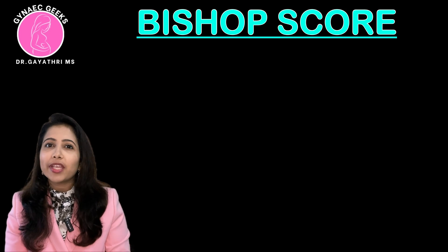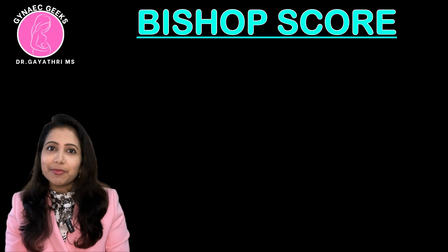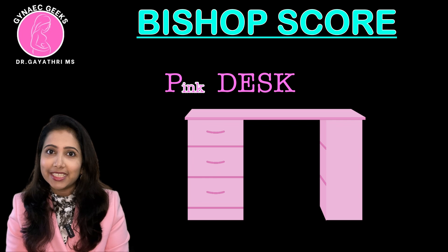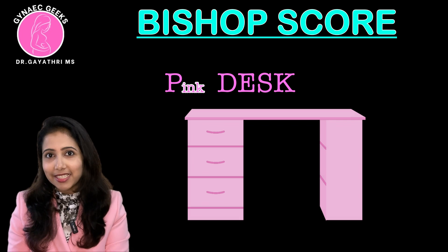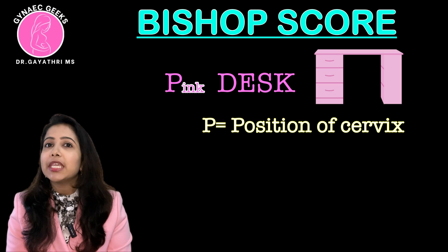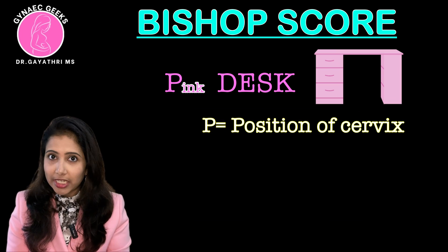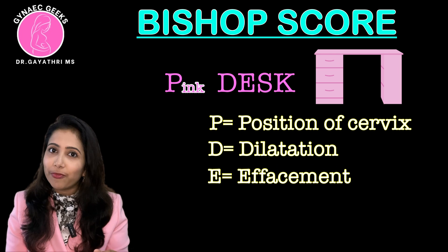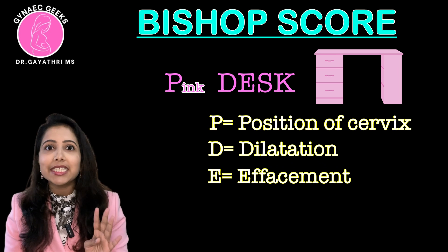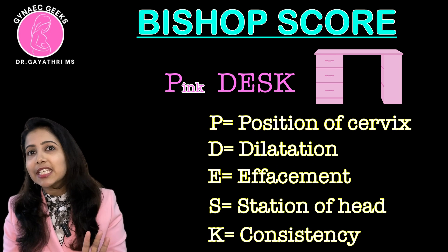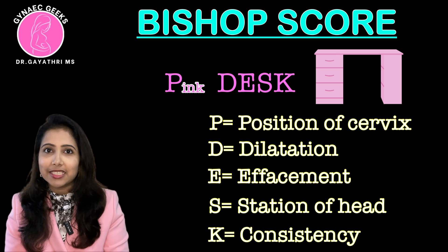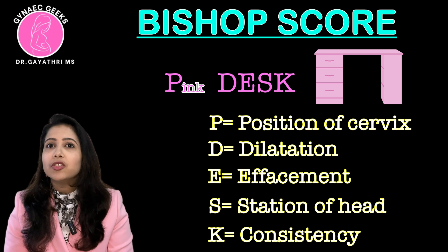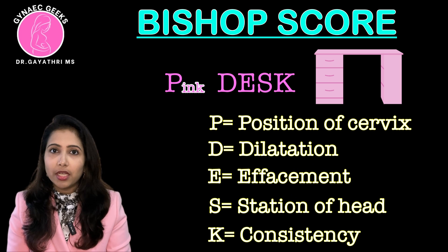Bishop's Score can be easily remembered with the mnemonic PINK DESC. P is for position, D is for dilatation, E is for effacement, S is for station, and C is for consistency. Let's remember: PINK DESC.